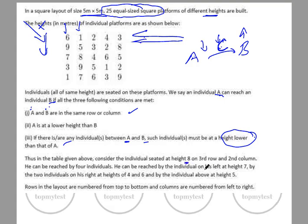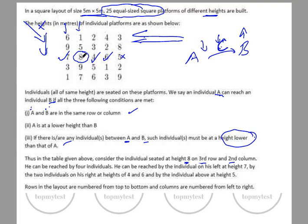There's an illustration given. Consider the individual seated at height 8, on the third row, second column. He can be reached by four individuals: the individual to his left at height 7, two individuals to his right at heights 4 and 6. Height 5 cannot reach 8 because 6 is in between and 6 is taller than 5. Similarly, 1 cannot reach 8 because 5 is in between, but 5 can reach 8. And 7 cannot reach 8 because 9 is in between. Rows are numbered top to bottom and columns left to right.